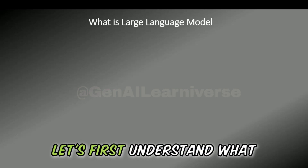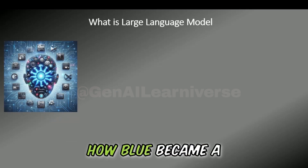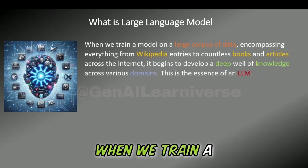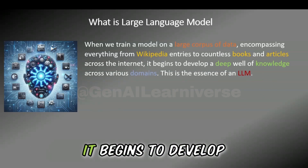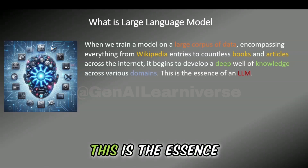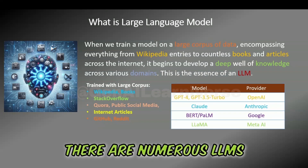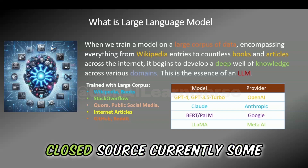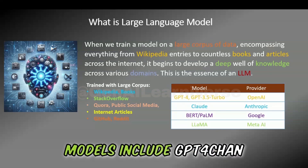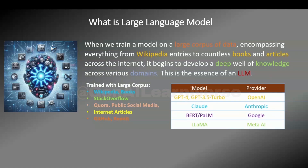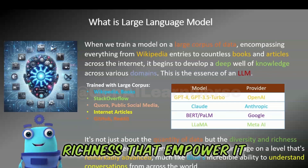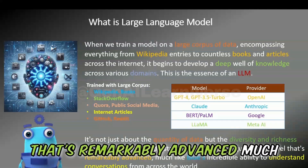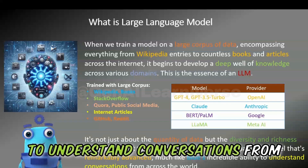Before moving ahead with our story, let's first understand what an LLM is and how Blue became a living example of a large language model. When we train a model on a large corpus of data, encompassing everything from Wikipedia entries to countless books and articles across the internet, it begins to develop a deep well of knowledge across various domains. This is the essence of an LLM. There are numerous LLMs available, with some being open source and others closed source. Currently, some of the most notable models include GPT-4 and GPT-3.5 Turbo from OpenAI, Claude from Anthropic, BERT and PaLM from Google, and LLaMA from Meta. It's not just about the quantity of data, but the diversity and richness that empower it to understand and generate language on a level that's remarkably advanced, much like Blue's incredible ability to understand conversations from across the world.